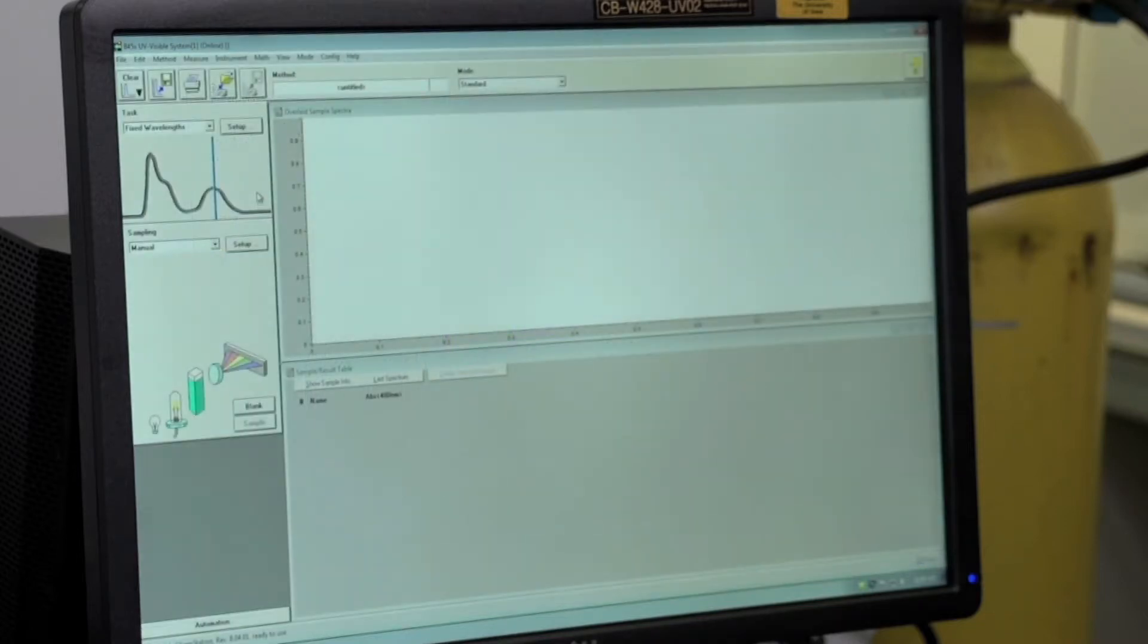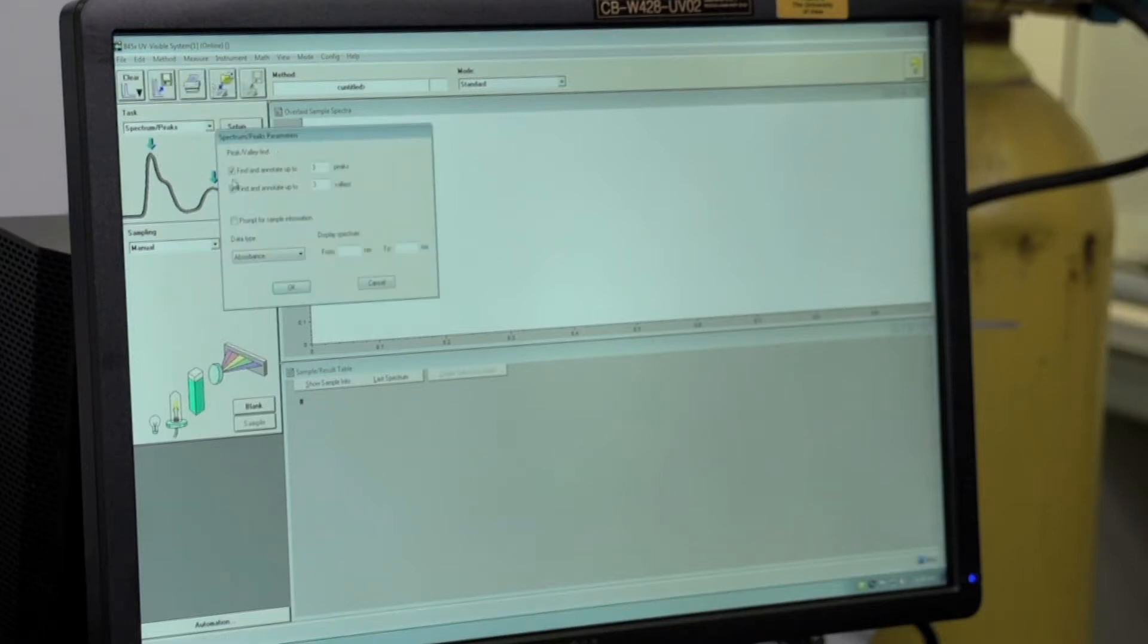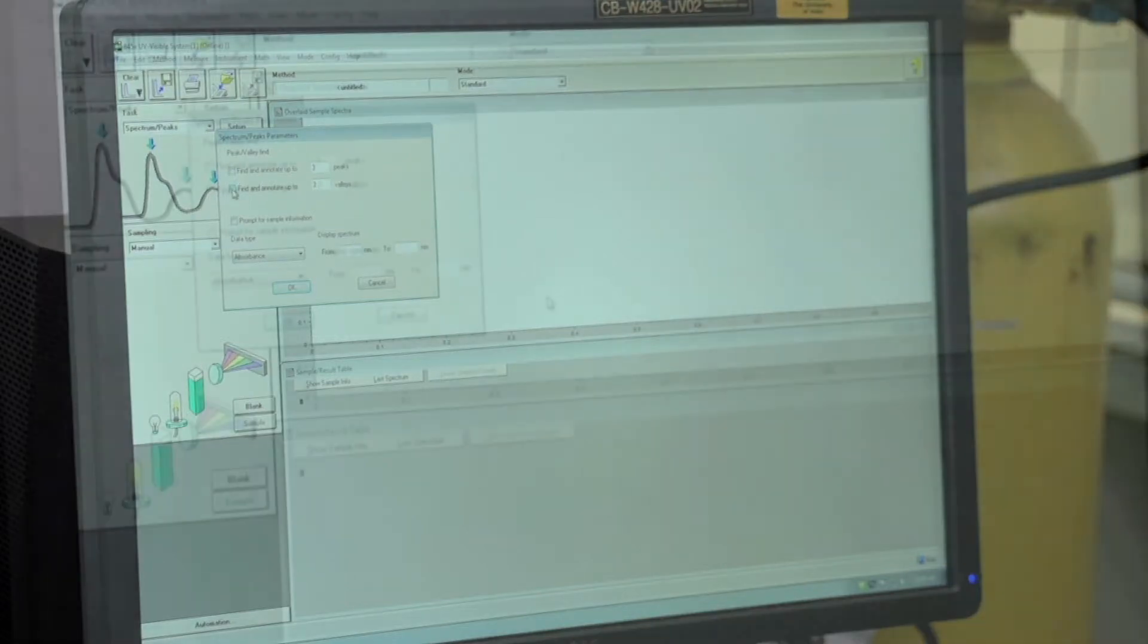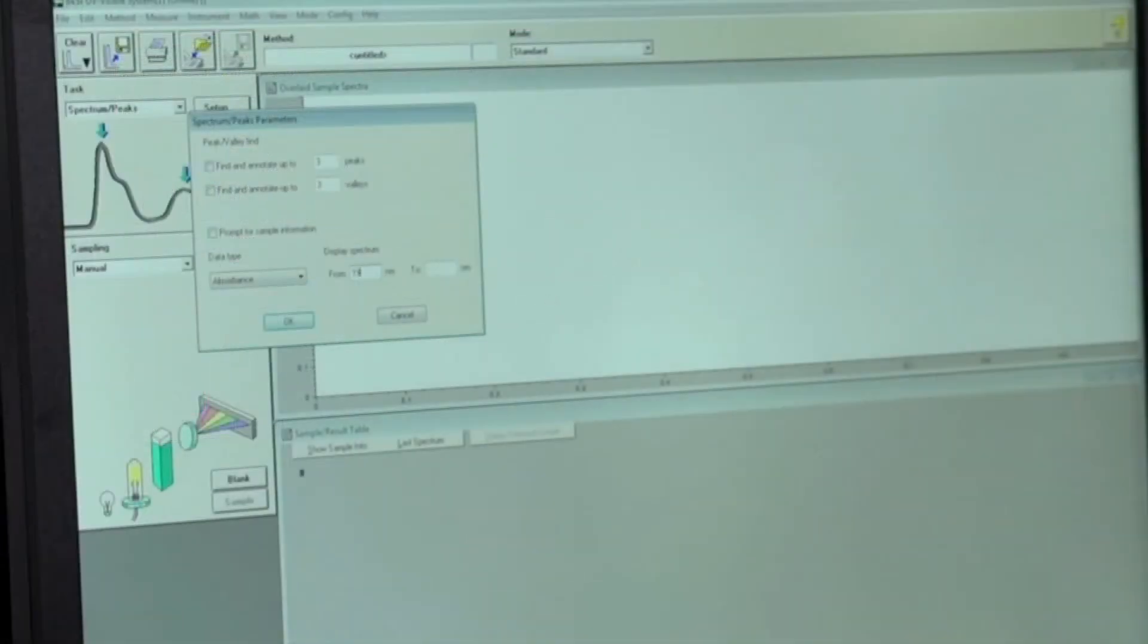To ensure that the instrument program is set up correctly, we will need to go to method and then select spectrum peaks to measure the full spectrum. And then we'll want to uncheck valley and peaks and then display the spectrum from 190 to 1100 nanometers. And then select OK.